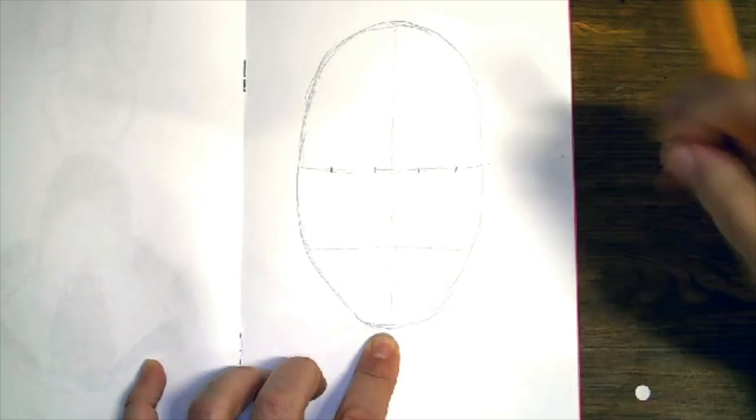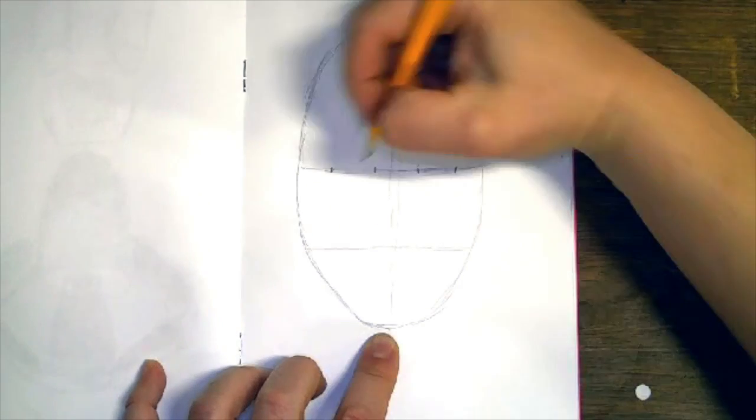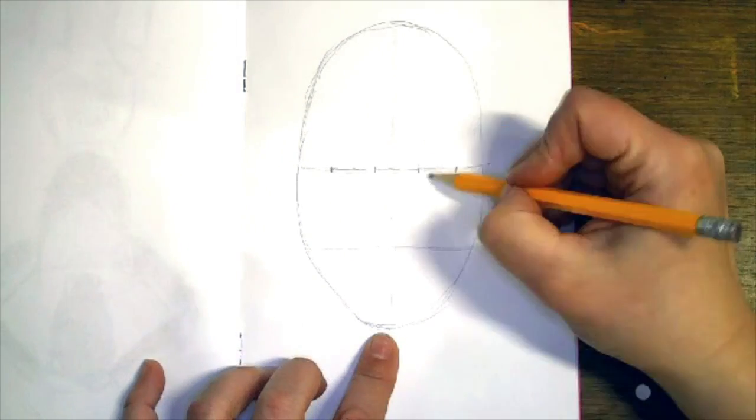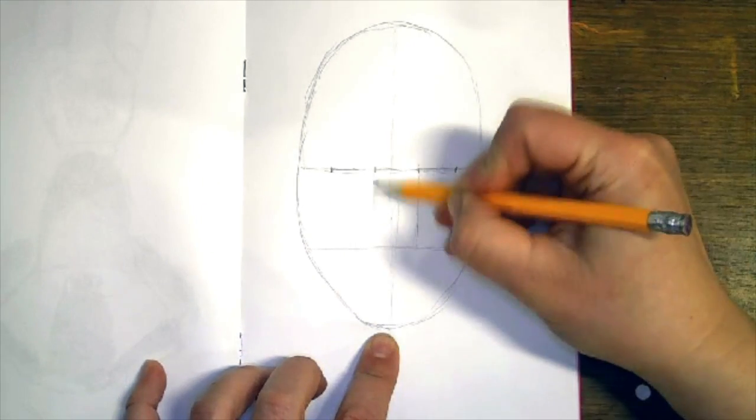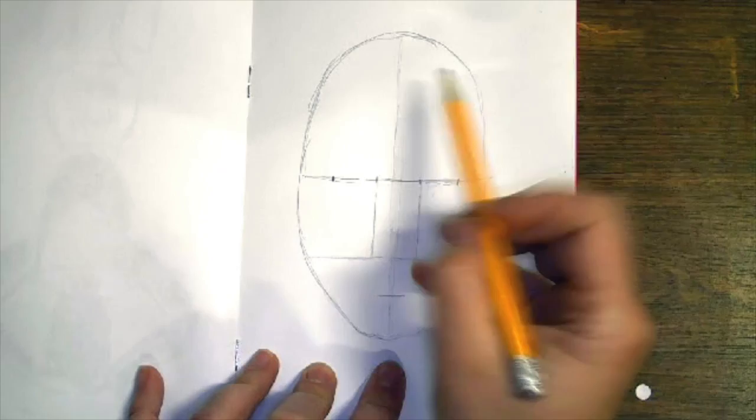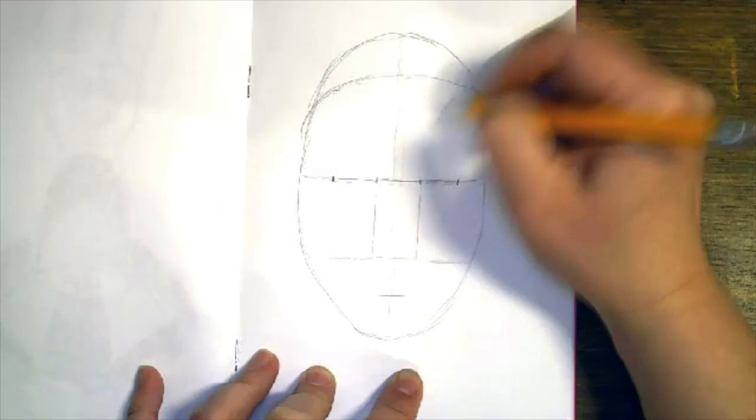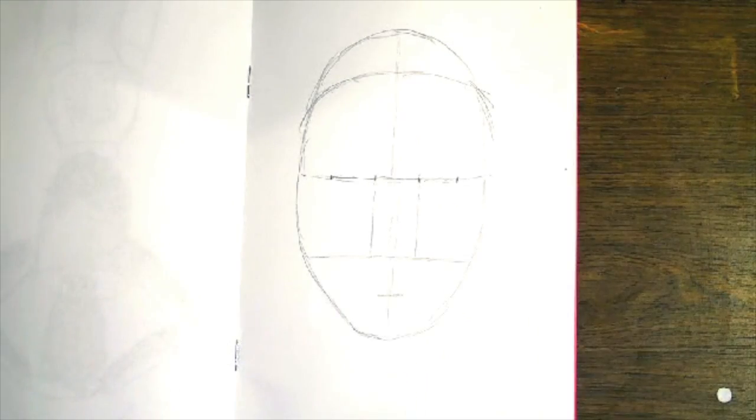Next we're going to find the eyes and make sure that your eyes are spaced equally so that you can fit five of them across. Bring from the corner of the eye guidelines down for the nose, and then you can go in for the mouth line which will be halfway in between the nose and the chin.